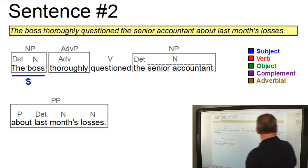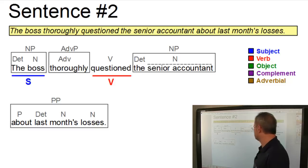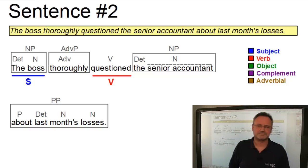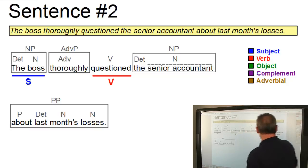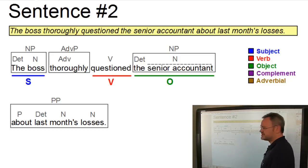The verb is simple. It's just a lexical verb questioned. Well, and the sentence has one object. The noun phrase, the senior accountant.